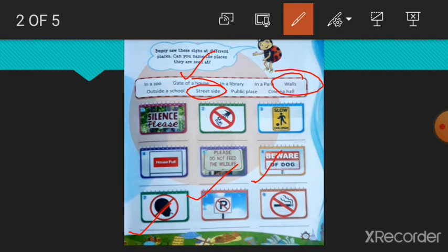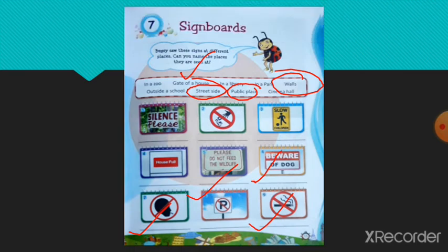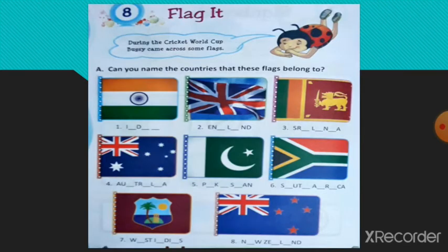Last one, number 9. You can see this signboard in public places. So right here, public place. Flag it. Chapter 8.